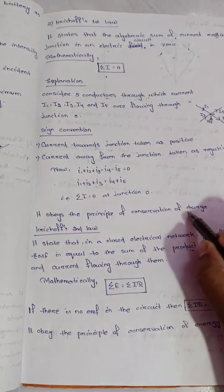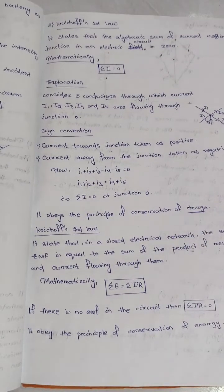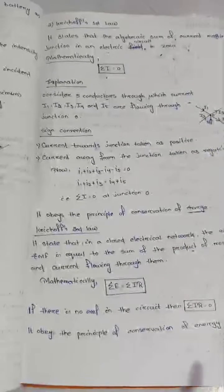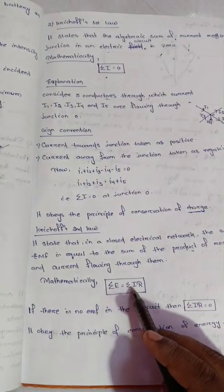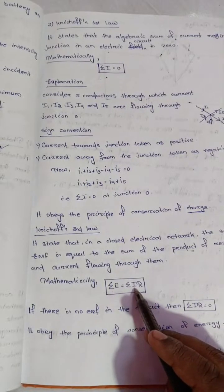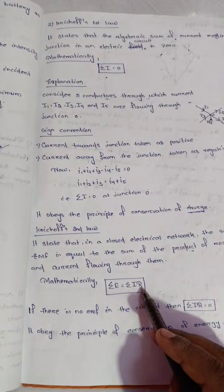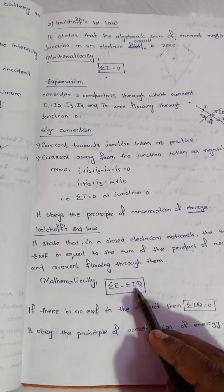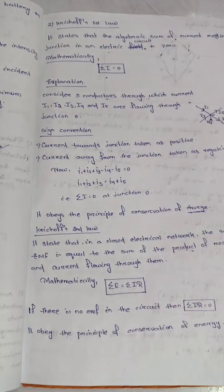This is very important for objectives. Kirchhoff's laws are based on conservation of charge and conservation of energy. The second law states: summation of EMF equals the summation of the product of current and resistance. This is 100% important.